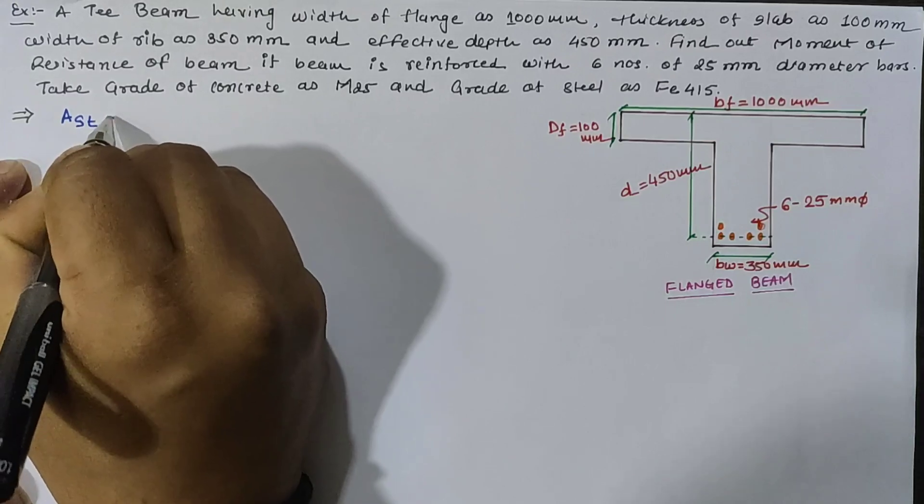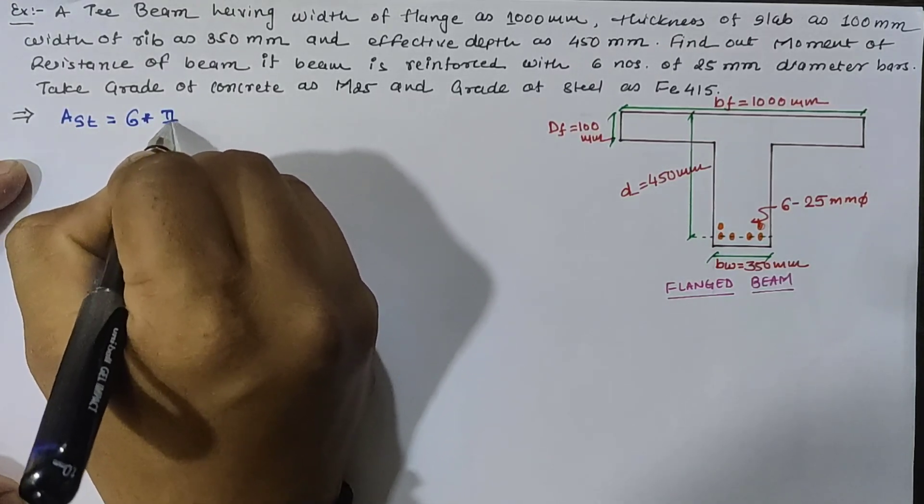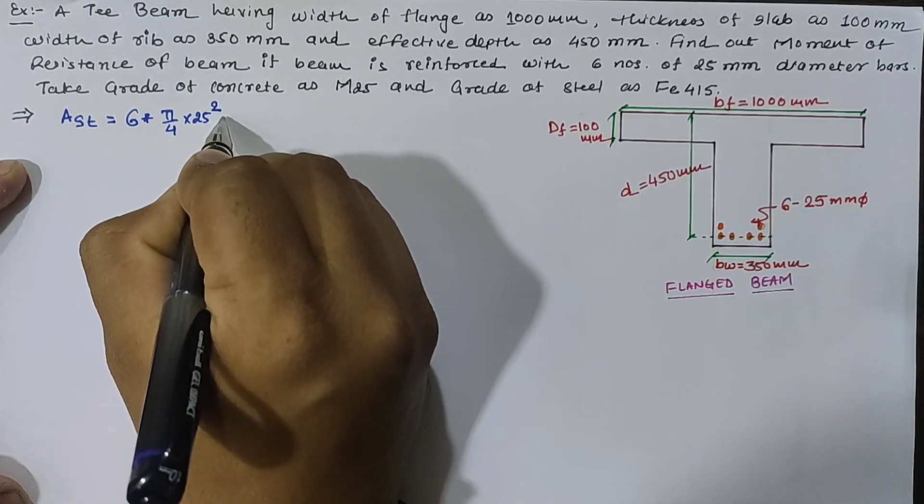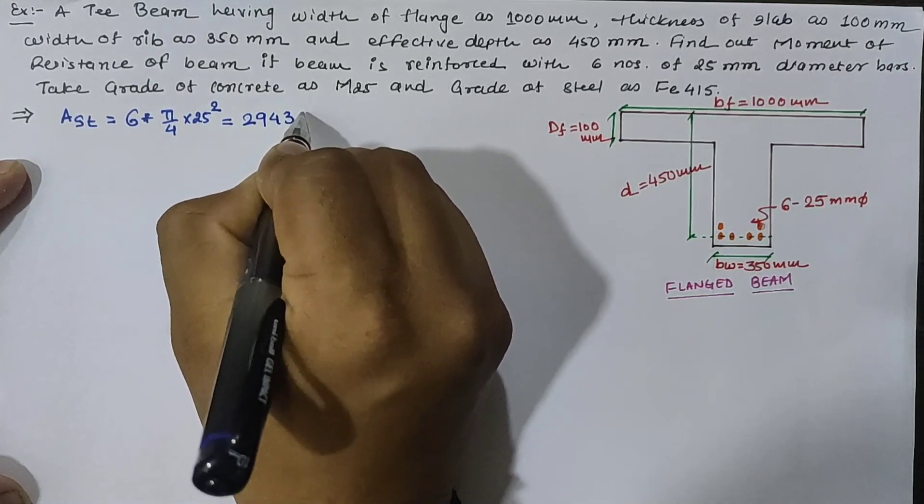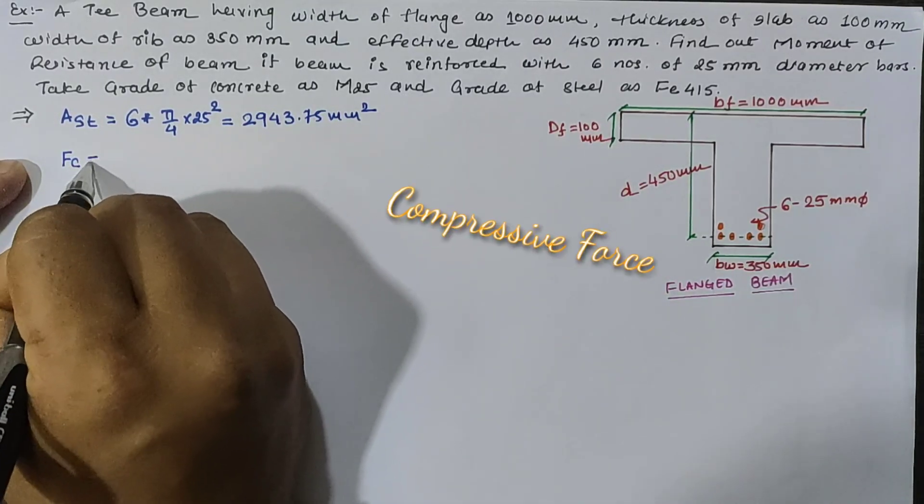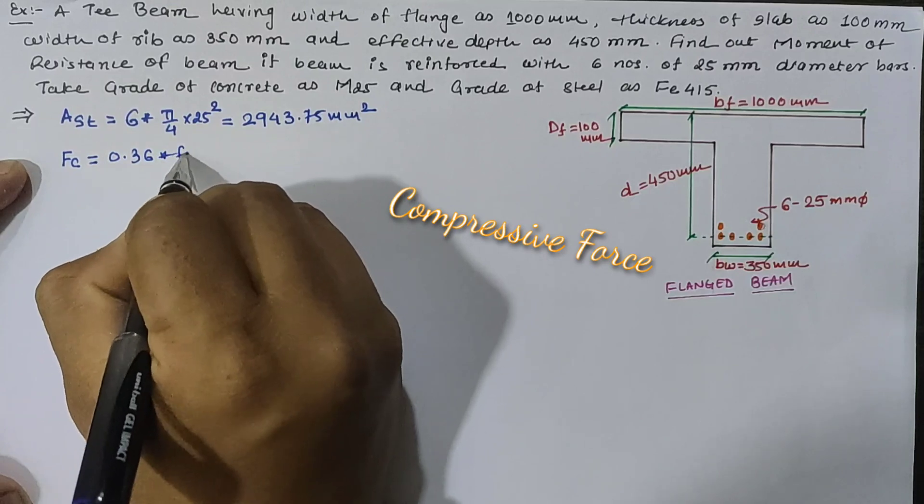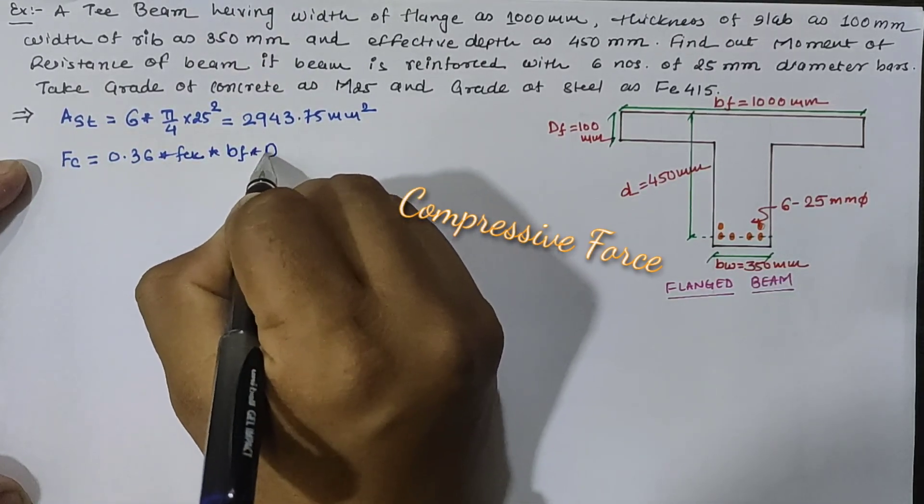From the given data we can calculate area of steel provided by equation, which is equal to 2943.75 mm². Compressive force is 0.36 fck times width of flange into depth of flange.